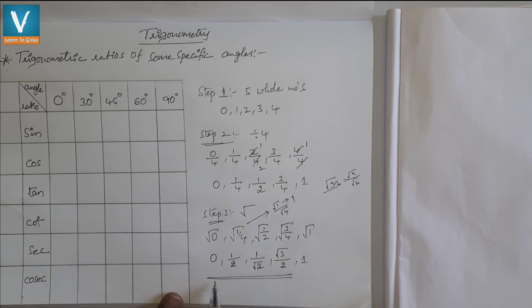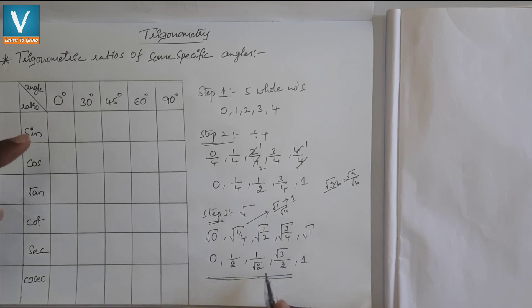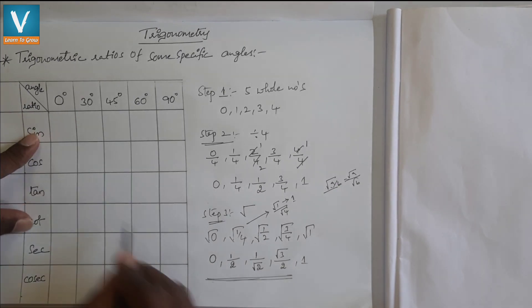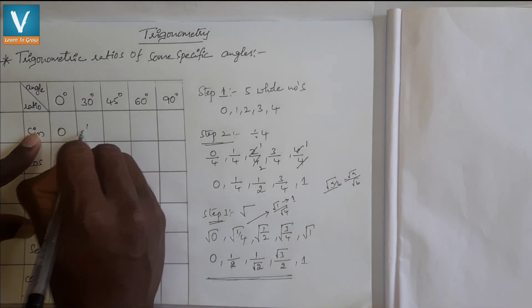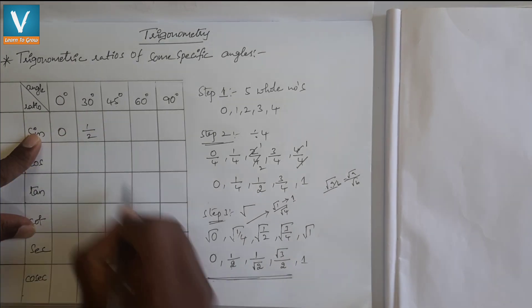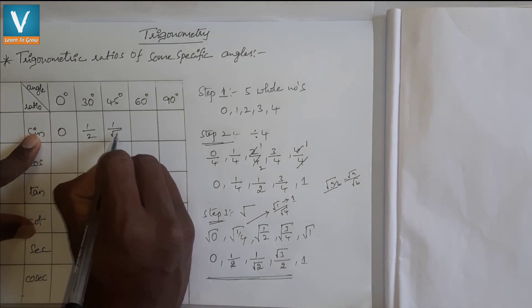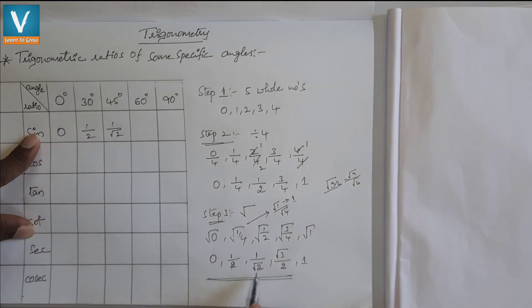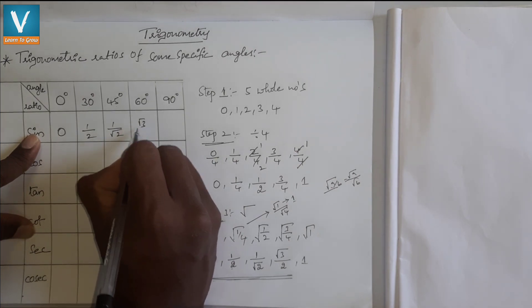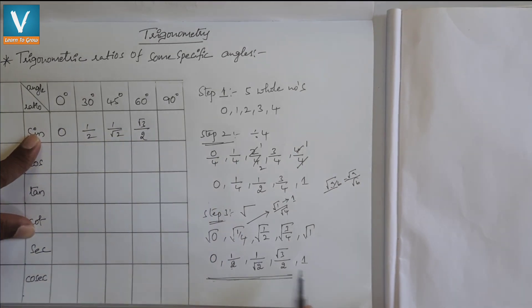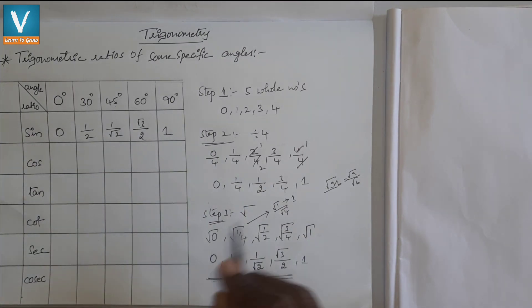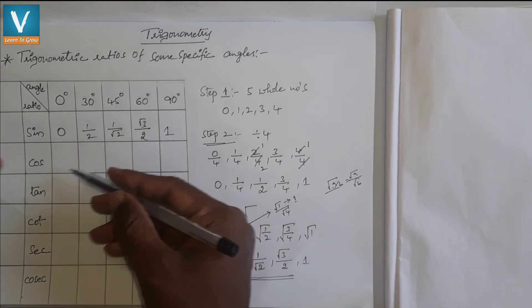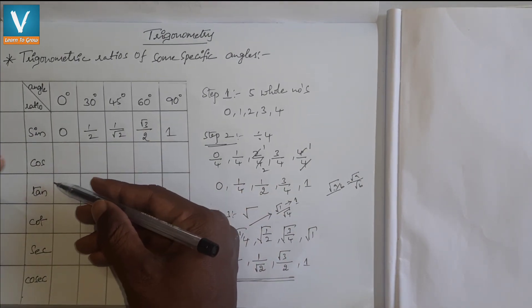After simplification, we consider these values as the sine values. So: sin 0° = 0, sin 30° = 1/2, sin 45° = 1/√2, sin 60° = √3/2, sin 90° = 1. If you know these sine values, the rest of the ratios can be found very easily.